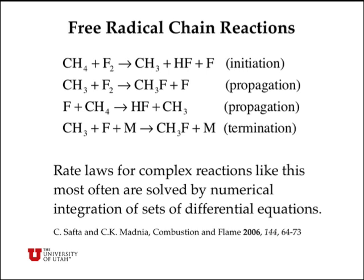The methyl radicals can react with F2 to form CH3F and generate a fluorine atom. The fluorine atoms then react with methane to form HF plus methyl radicals. So the free radical product of one propagation step is the reactant in the other, and it in turn reproduces the methyl radicals which are the reactant in the first step. Rate laws for these complex reactions are most often solved by numerical integration of sets of differential equations, but sometimes we can find closed-form solutions, which are often characterized by concentrations of stable species to the one-half or three-halves power.